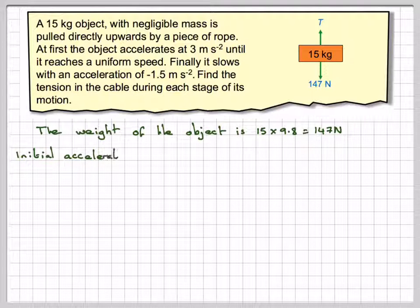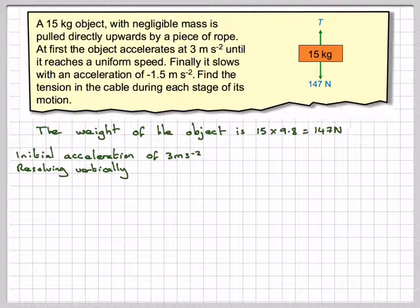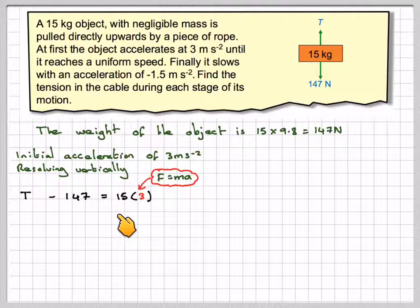The initial acceleration of 3 metres per second squared, if we resolve vertically, we've got the tension minus the weight, so T minus 147 equals MA, which is going to be 15 times 3, because it's accelerating at 3 metres per second squared, using F equals MA. Solving that, we get T equals 192 newtons.